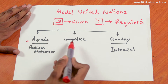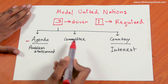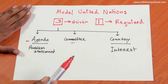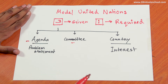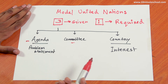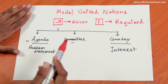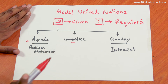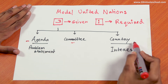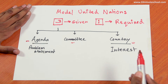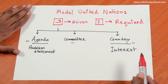The second thing is the committee. The other thing is the UNDP, UNICEF, UNESCO. The first thing is the committee. The third thing is the country.